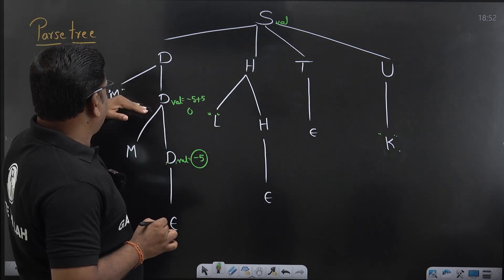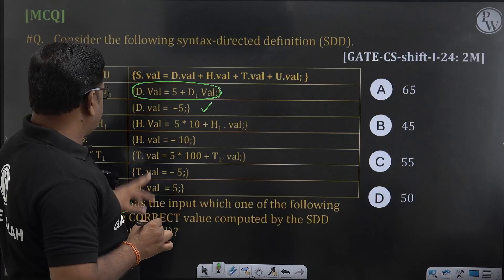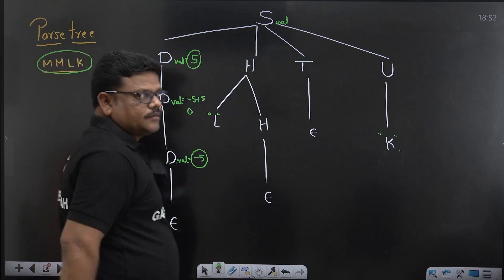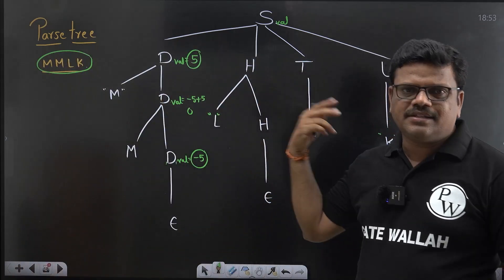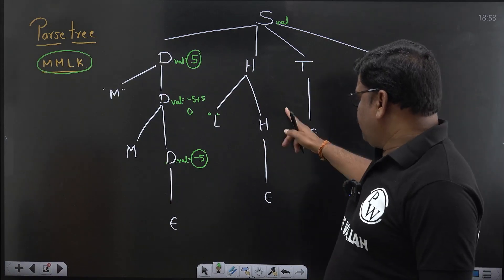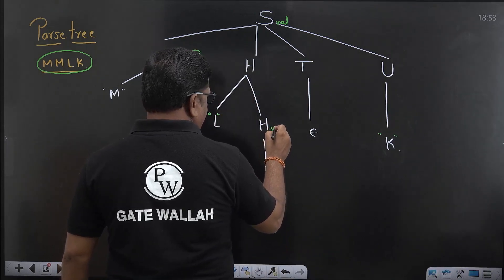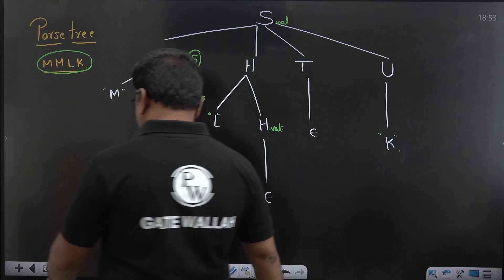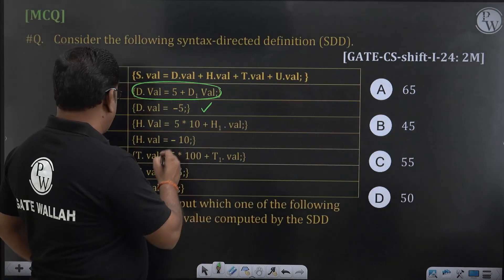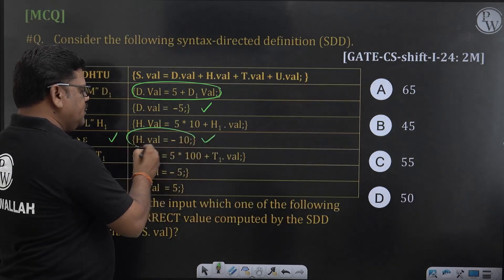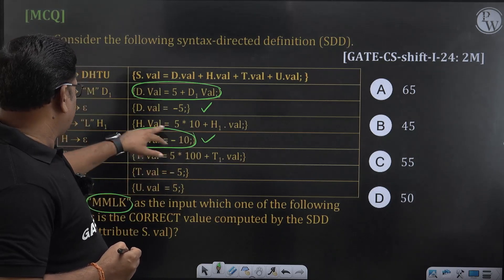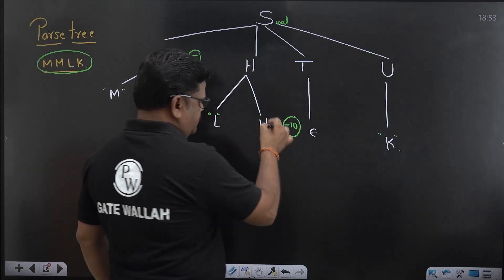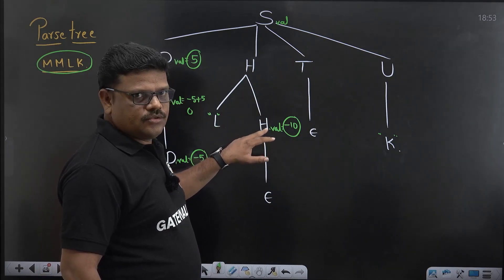Again the parser uses the production D → MD with the same semantic rule D1.val + 5, so 0 + 5 gives D.val = 5. Now for the production H → ε, the semantic rule attached with this production says H.val is assigned minus 10. So here the attribute value H.val is minus 10.